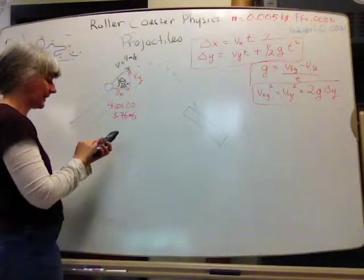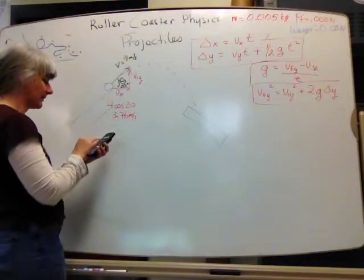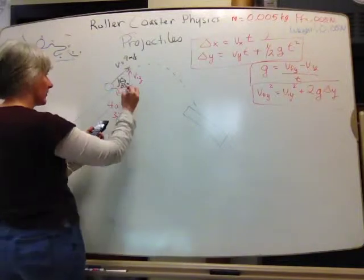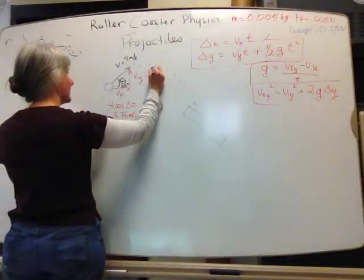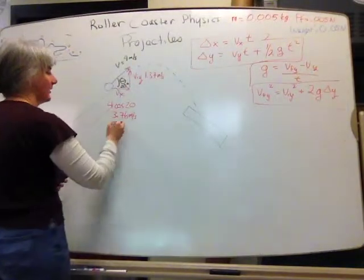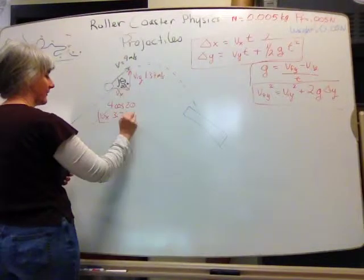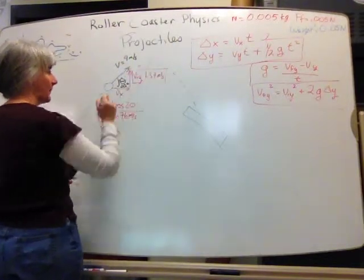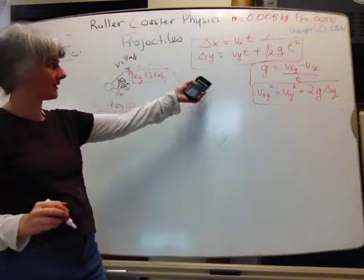And for vertically, I would like the sine of that times the hypotenuse. So that's 1.37 meters per second. Now I have vx and viy. And I'm going to put them into this equation.